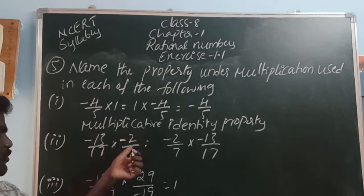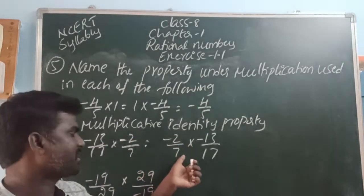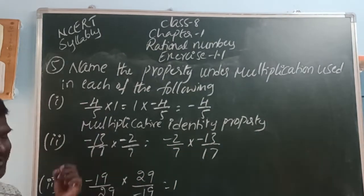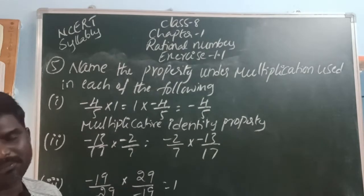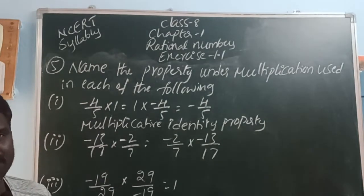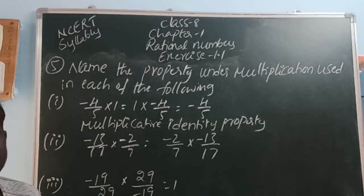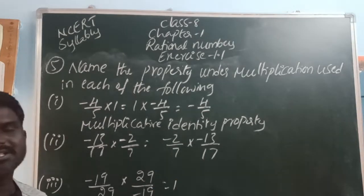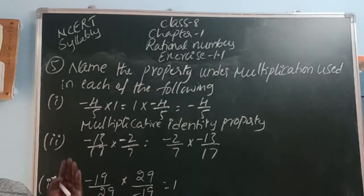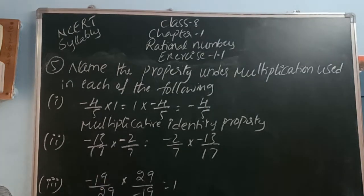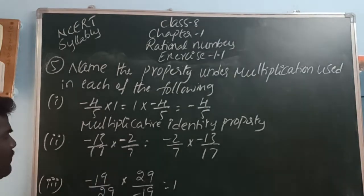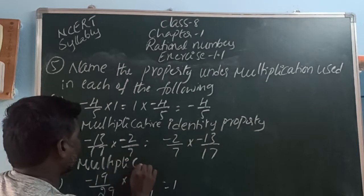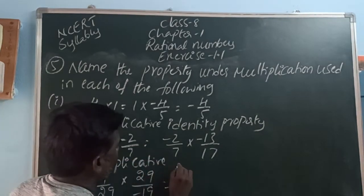Second: minus 13 by 17 into minus 2 by 7 equals minus 2 by 7 into minus 13 by 17. If you take any two rational numbers, you can multiply in any order and get the same result — LHS equals RHS. That means A into B equals B into A. That property is called multiplicative commutative property.